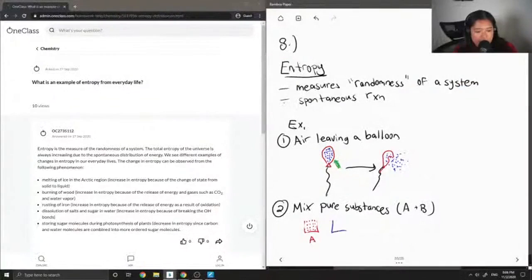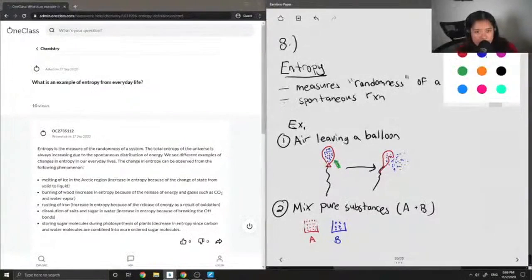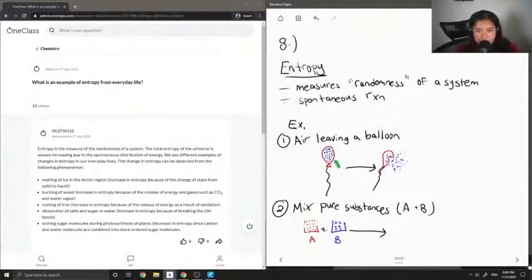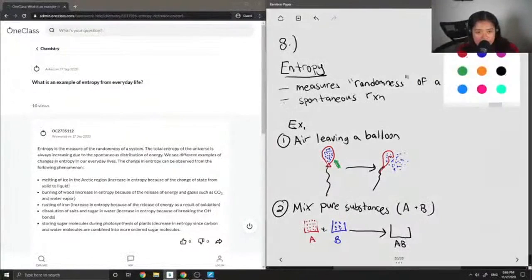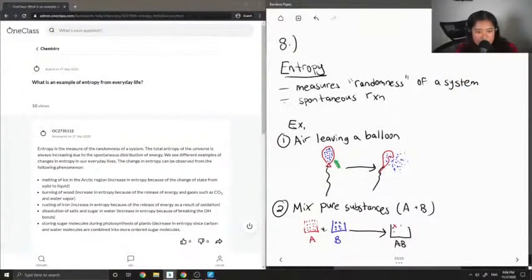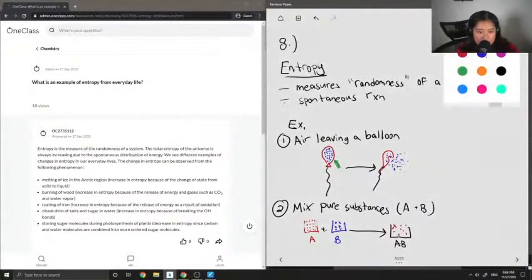And you also have an ordered B substance. If you mix them up, this is an increase in entropy since it increases the messiness of the system.